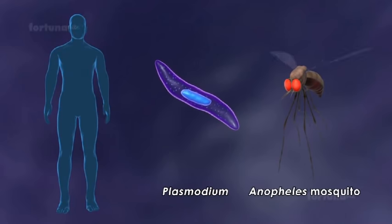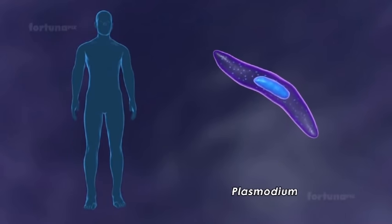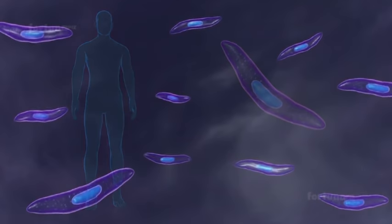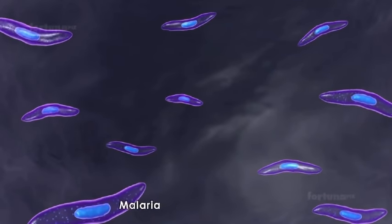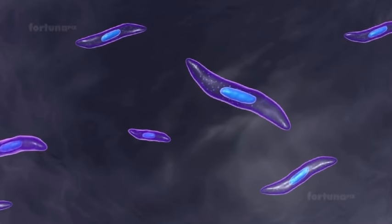The Female Anopheles Mosquito. Let's recap the Life Cycle of Plasmodium in Humans. Malaria is a disease caused by the Unicellular Parasite Plasmodium which belongs to the Phylum Sporozoa.